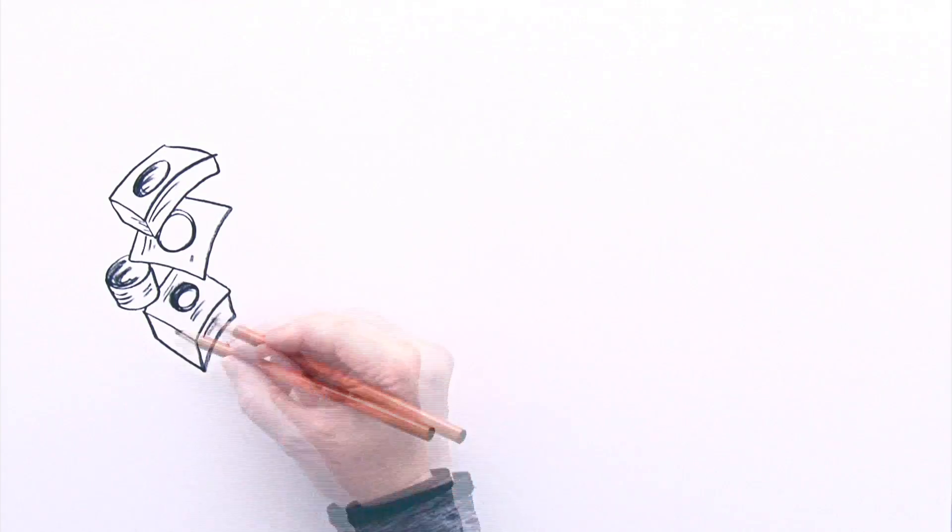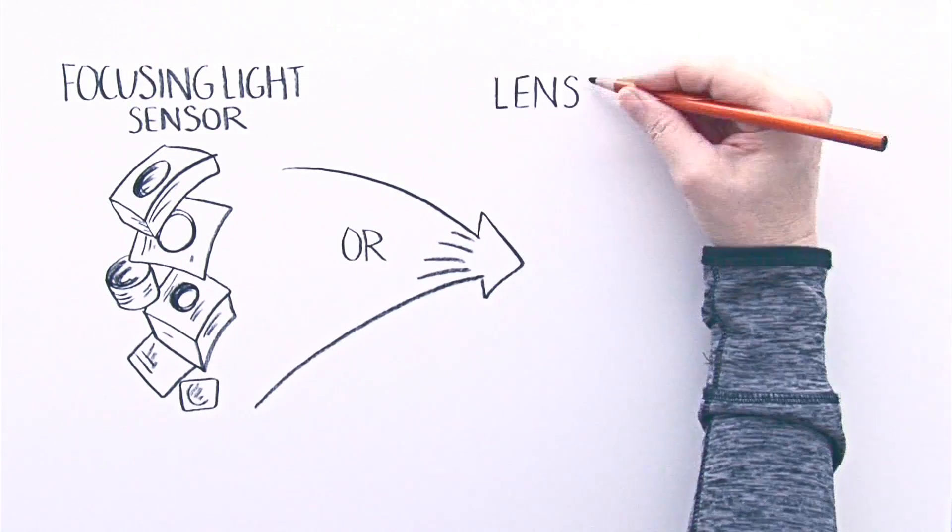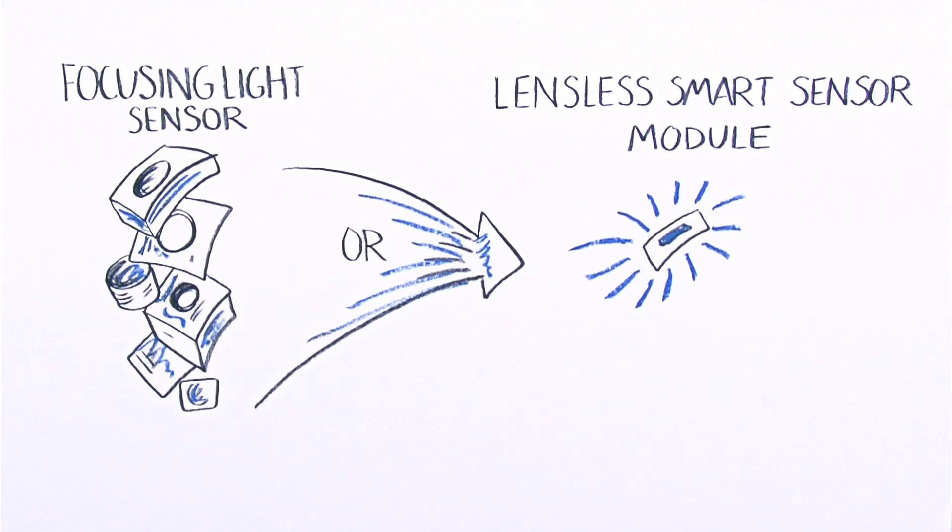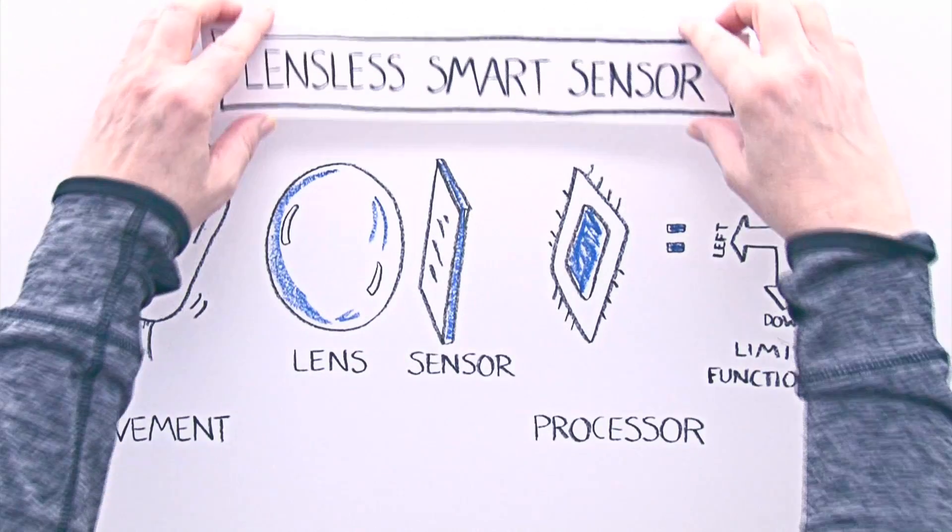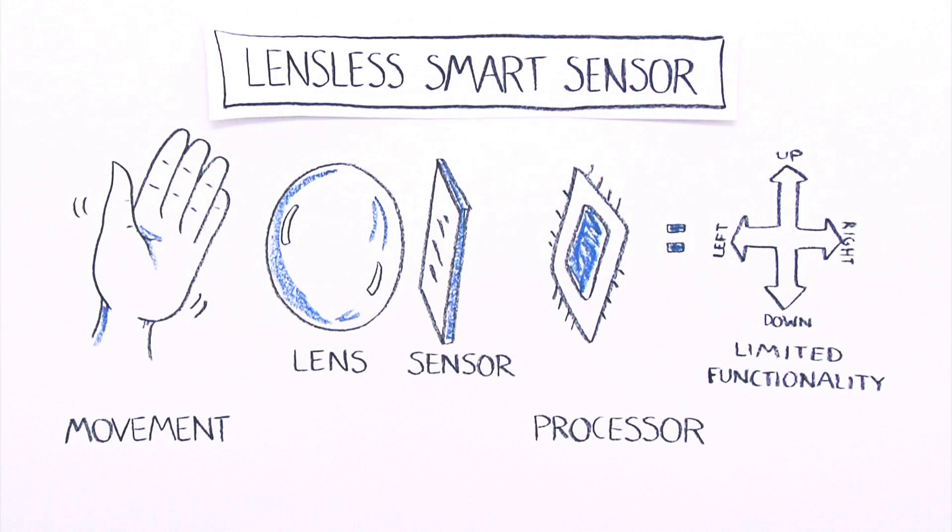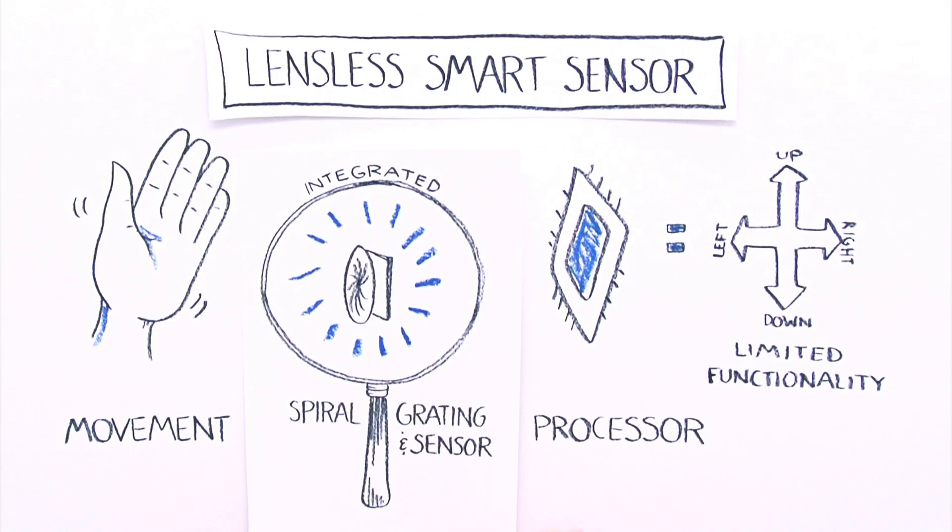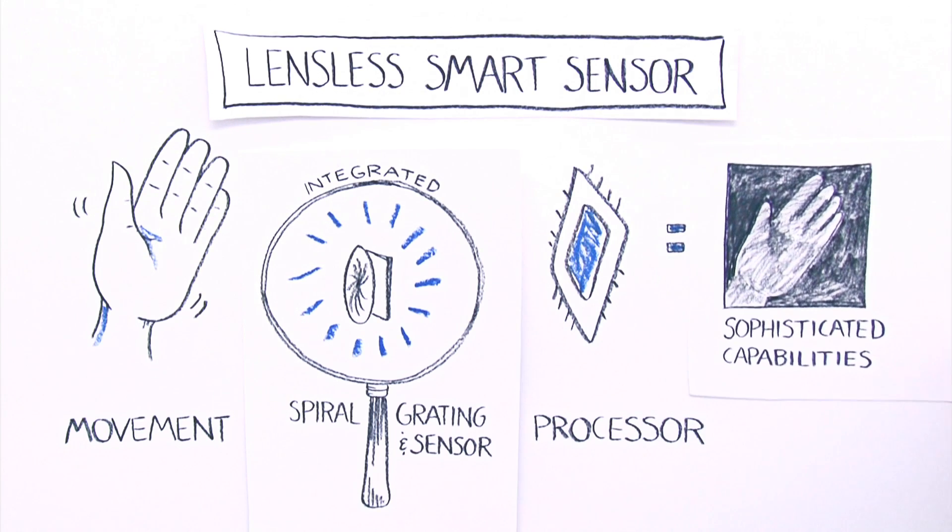Our lensless smart sensor, however, takes a novel approach with a drastically reduced footprint. We did this by replacing the focusing components with an ultra-miniaturized diffractive optic. This allows the sensor to capture the raw, seemingly unrecognizable data and reconstruct it into any number of smart outputs using algorithmic computations embedded right in the sensor.